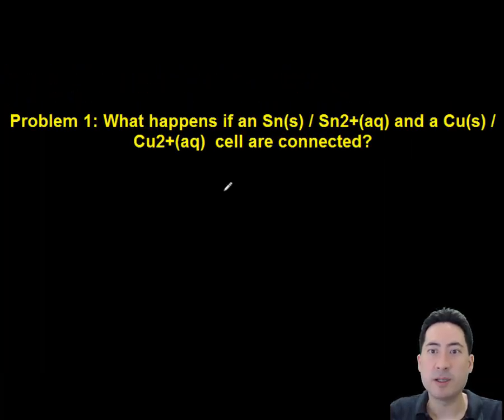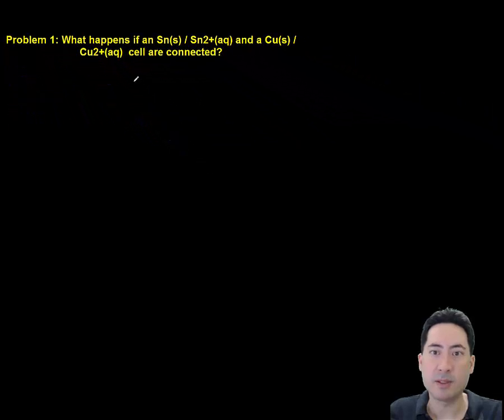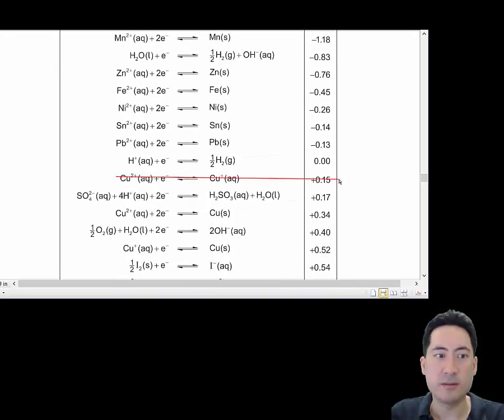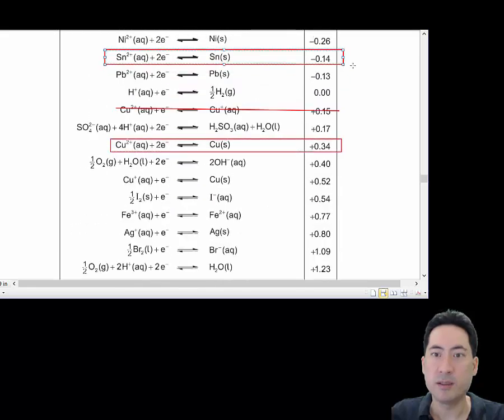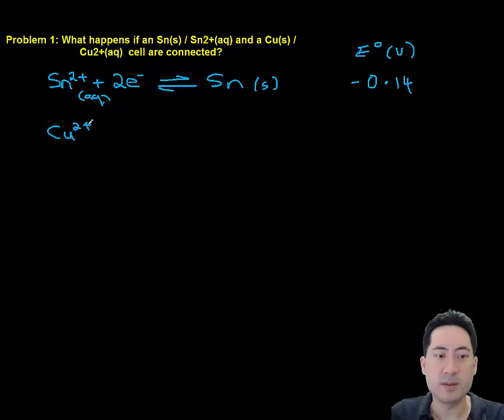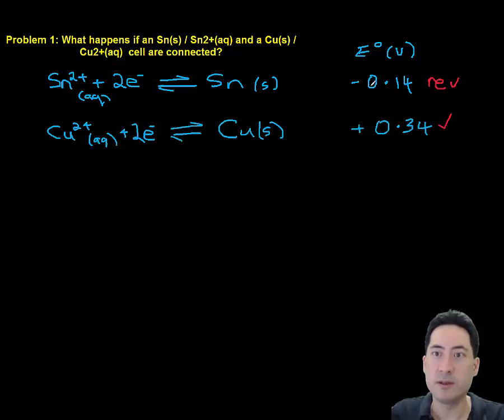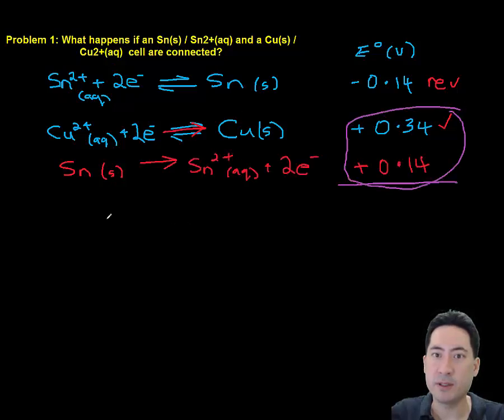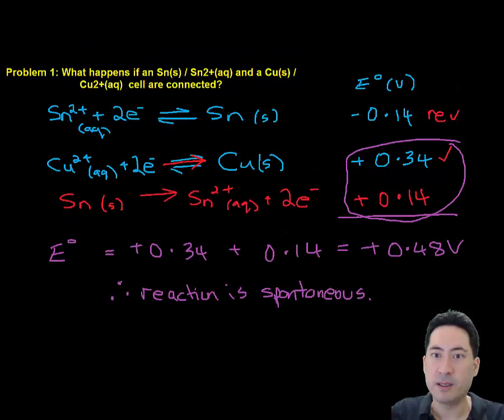So problem one, what happens if you connect a tin and a copper cell together? So first we go to our data booklet and we find the correct equations. And we copy those out, writing the electrode values out. Make sure you do this because it'll save problems and transcription errors. So we take the most positive one as the copper. And so we need to rewrite out and reverse the sign of the tin. We can then add those together. And that gives us 0.48 volts.